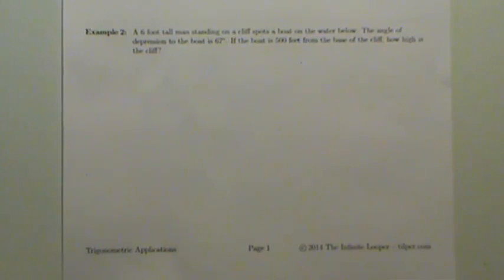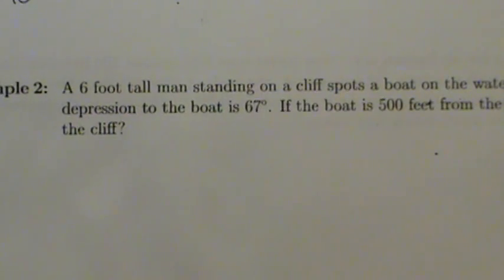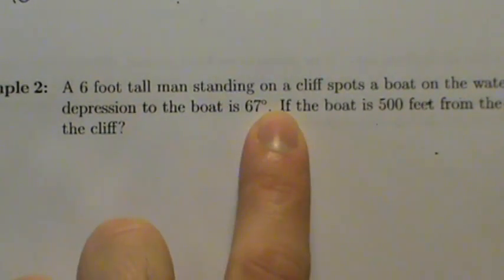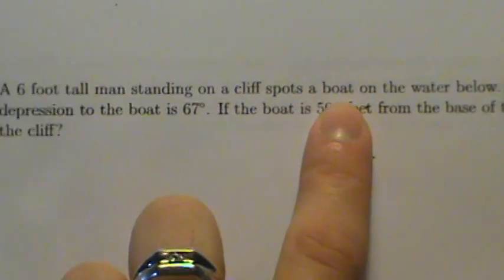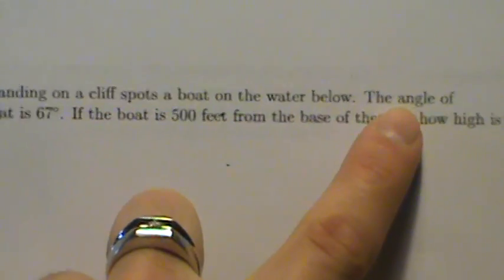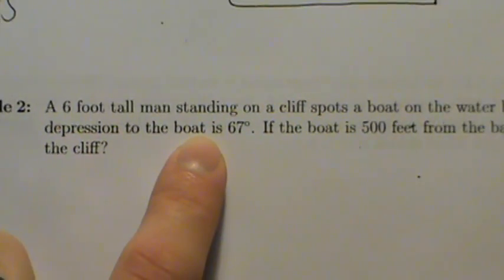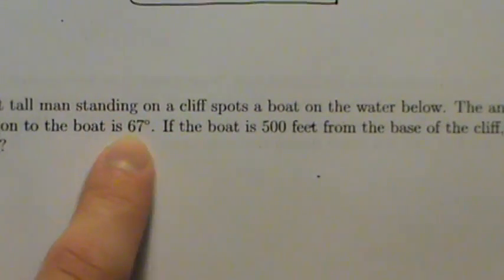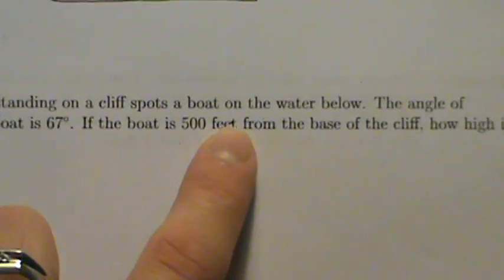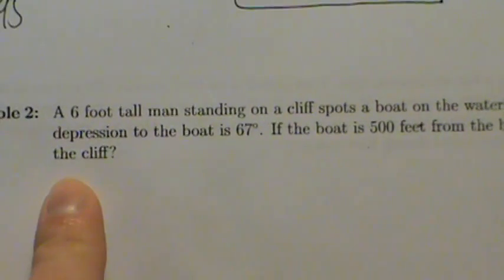So example two: a six-foot-tall man standing on a cliff spots a boat on the water below, and the angle of depression to the boat is 67 degrees. If the boat is 500 feet from the base of the cliff, how high is the cliff?